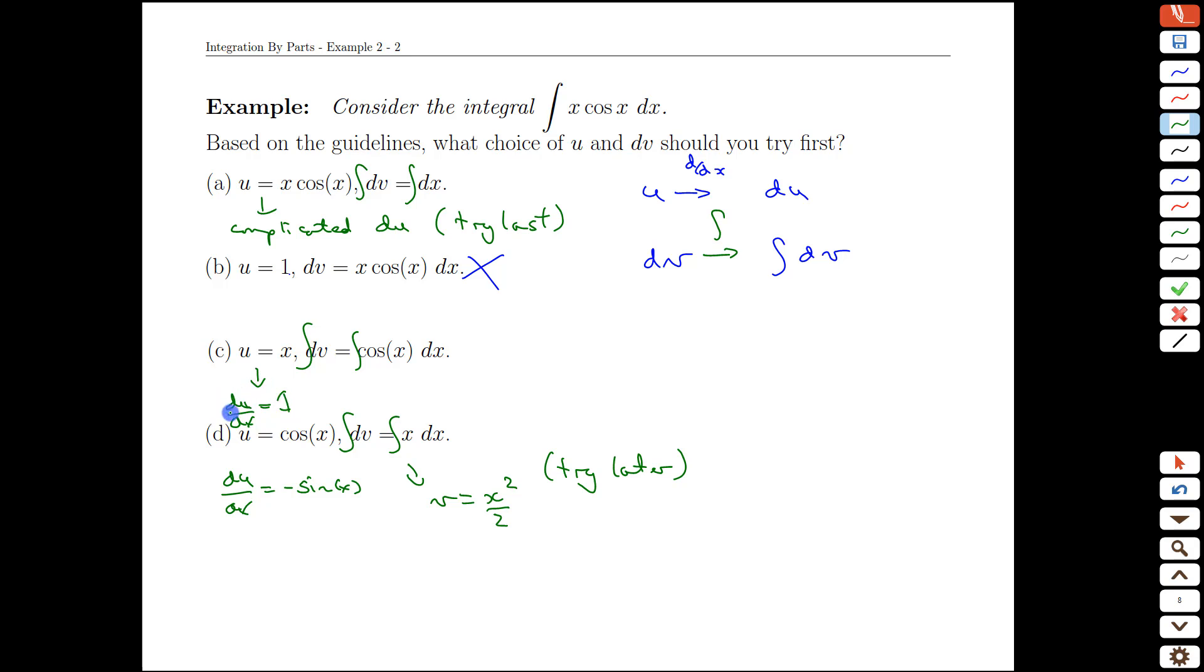This is nice. This is a simpler expression. And the integral of cos is just sine, so we don't complicate our lives with the integral side. We can do the integral and it's about the same, but the derivative of the u is definitely simpler. So this is the one that we would recommend as the next step.